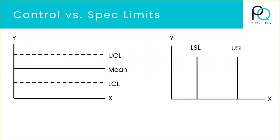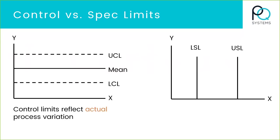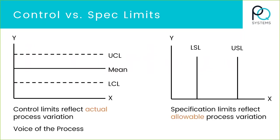Capability is about trying to drive the process average to the target value and reduce the variability. Some important concepts: on control charts we have control limits; on histograms we have specification limits. There's a lot of confusion around control limits or three-sigma limits. Control limits are there to talk to you about the actual variation — often called the voice of the process. Specification limits, on the other hand, are the allowable process variation — often called the voice of the customer. What you should remember is control limits and specification limits don't have a lot to do with each other.